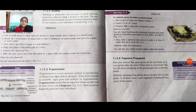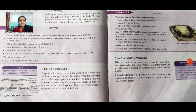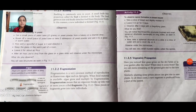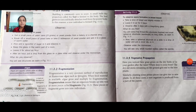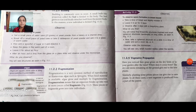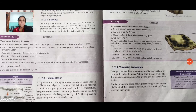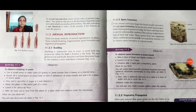In fragmentation, the organism breaks down into many pieces called fragments. These pieces or fragments grow into new individuals. In fragmentation, they break down and grow into new individuals — as seen in the figure. This type of reproduction is called fragmentation, which we can see in algae.